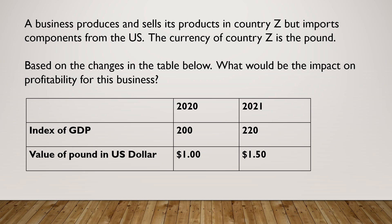The currency of country Z is the pound. Based on the changes in the table below, what would be the impact on profitability for this business? In 2020, the index of GDP was 200, but it was 220 in 2021. And the value of the pound — the currency of country Z — in US dollars in 2020 was $1, and in 2021 it has clearly appreciated to $1.50.